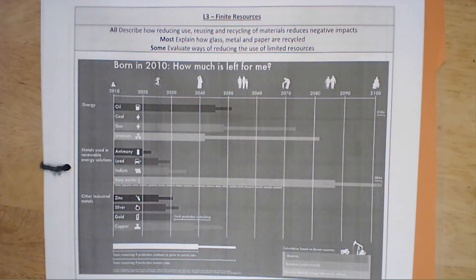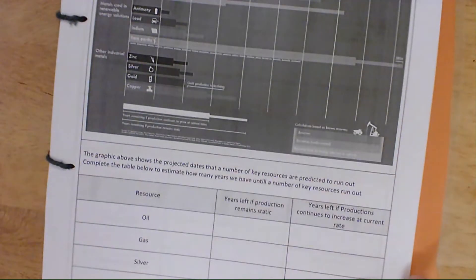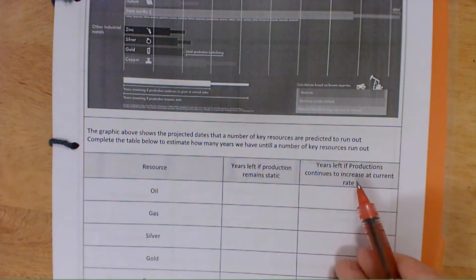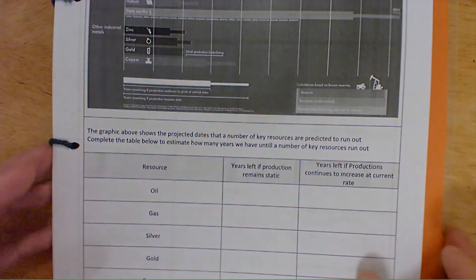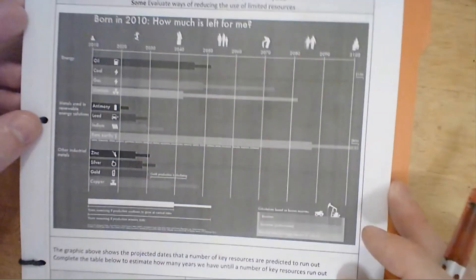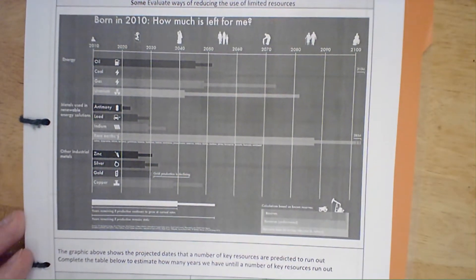So if however much we're consuming right now is assumed to stay static, the thinner bar shows how long it would last. I'd like you to estimate, for crude oil, natural gas, silver, gold, and copper: how many years we have left if production remains static (the thinner bar), and how many years if the rate of consumption continues to grow at the current rate.